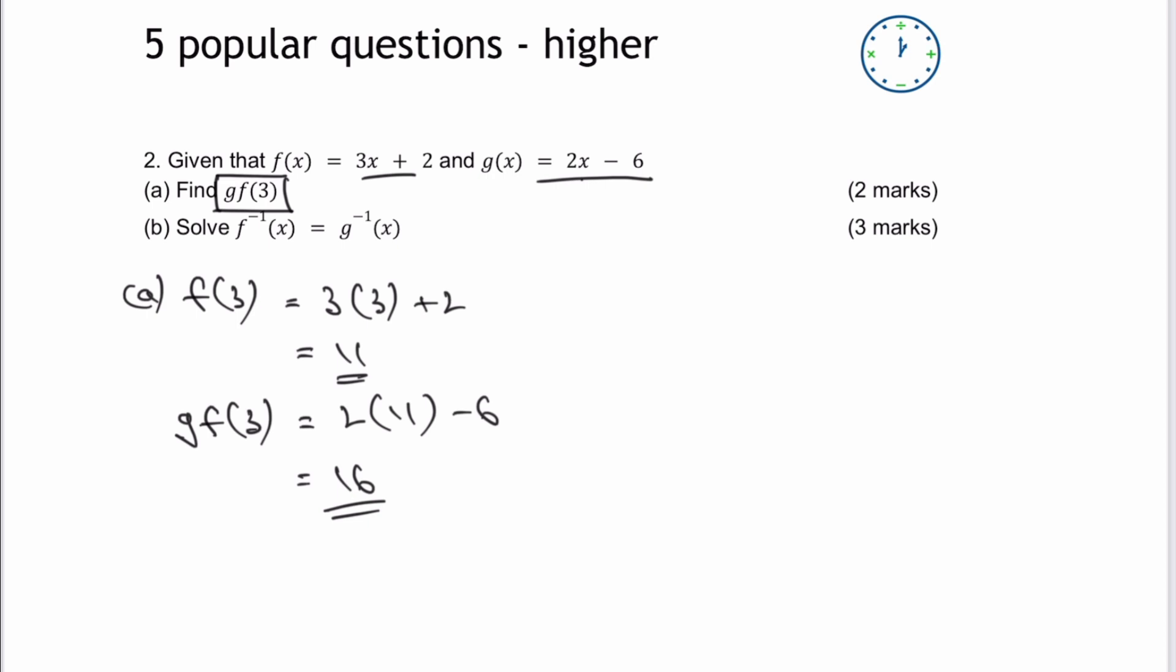Let's have a look at part B. Now part B is a little bit trickier because we need the inverse function for each of them. So we've got F inverse of X and then the inverse of G. So let's have a look at working out both of those first.